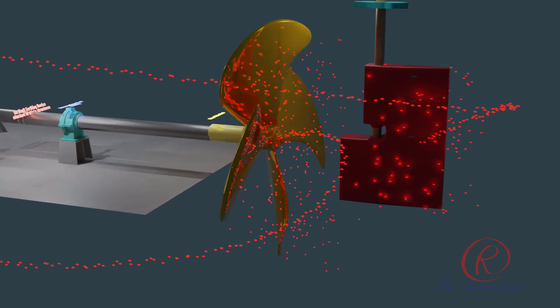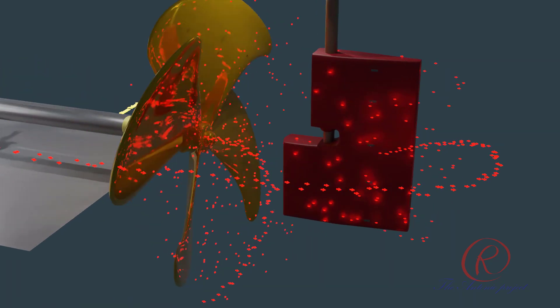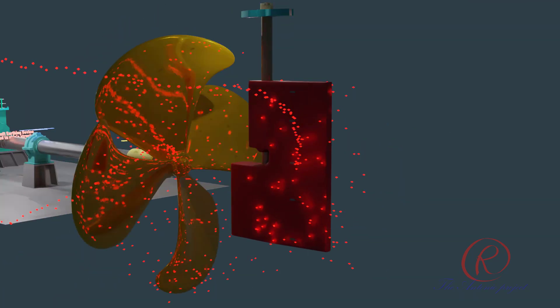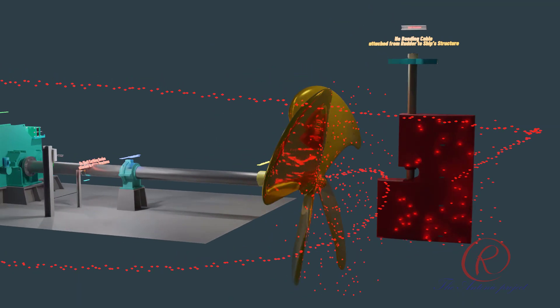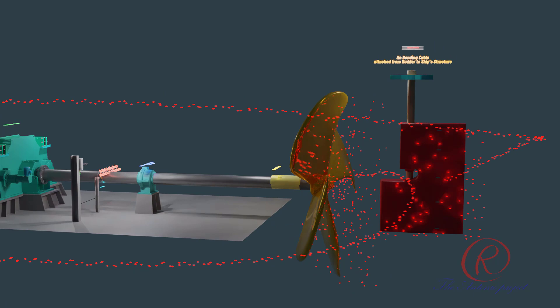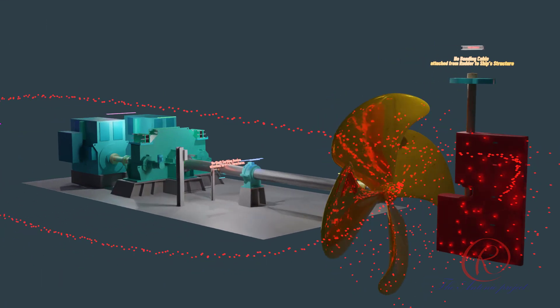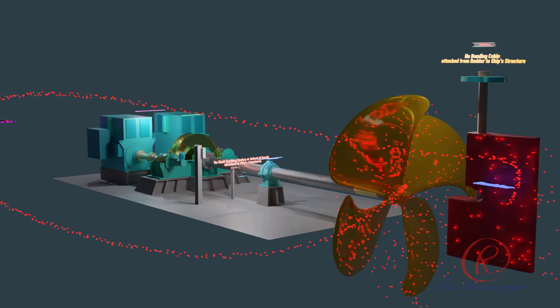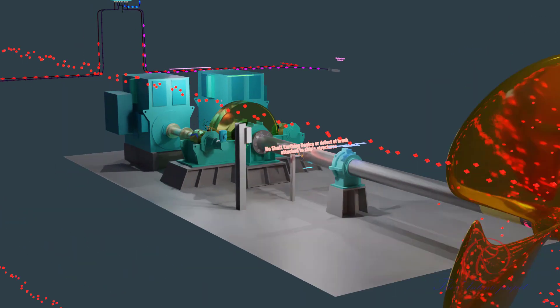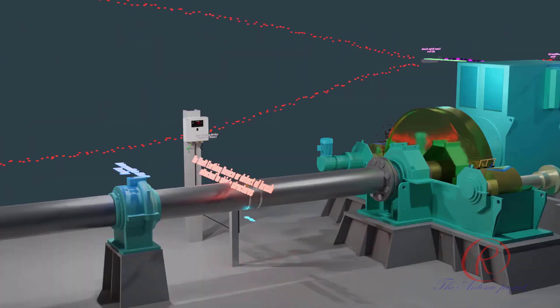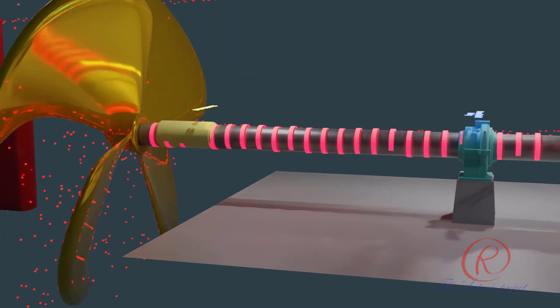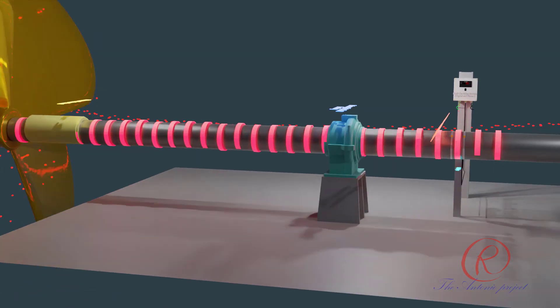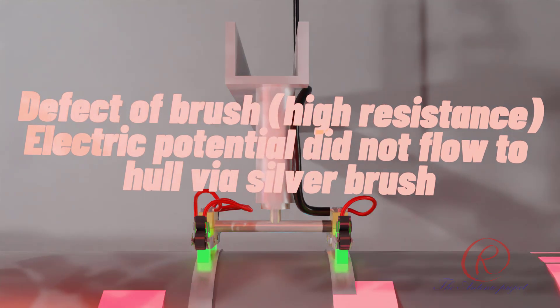Arc erosion can occur due to lubrication oil breakdown such as contamination with water and high metal contents. When the propeller is at rest, the stern tube, propeller shaft and main bearings are in contact with each other, maintaining continuity of the circuit. When the ship is running, due to the rotation of propeller and lubricating oil film, the shaft becomes partially electrically insulated. When there is no shaft earthing system or defect of silver brush such as high resistance, it can cause the potential energy from shaft unable to flow to hull via silver brush.